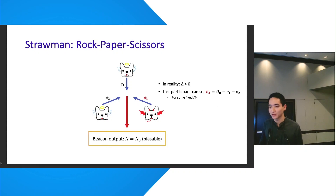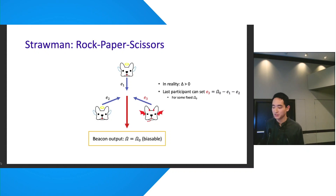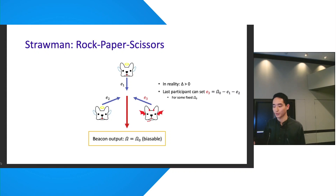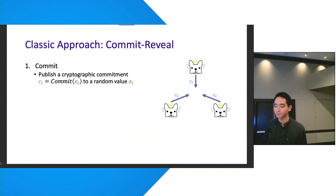In reality, network latency delta is obviously present and greater than zero. In this case, the last participant can maliciously set the beacon output and fix it to a predetermined value, which is probably the worst outcome of a DRB protocol.